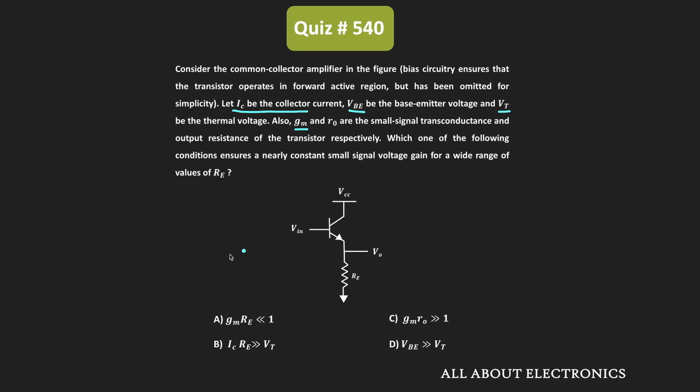Based on these parameters, we have been given four different conditions. From the given options, we need to find the condition under which the small signal voltage gain of this common collector amplifier remains almost constant over the wide range of values of Re.